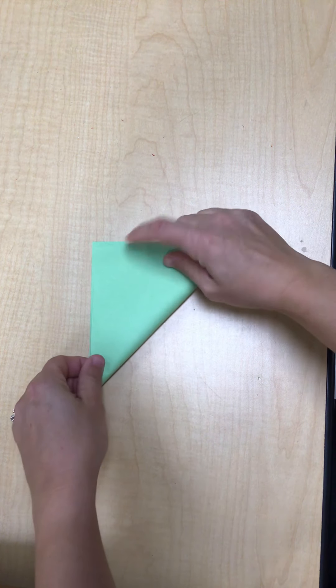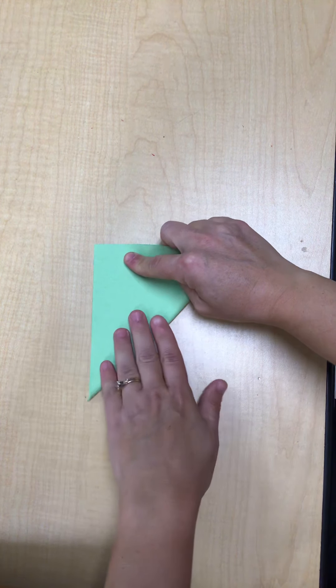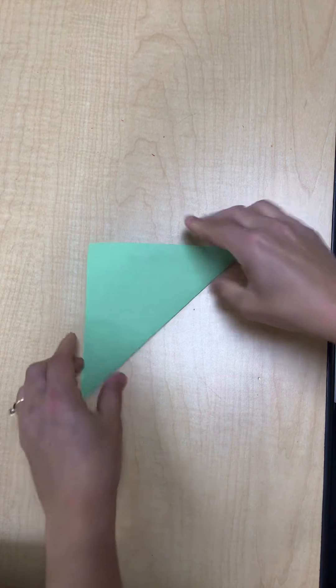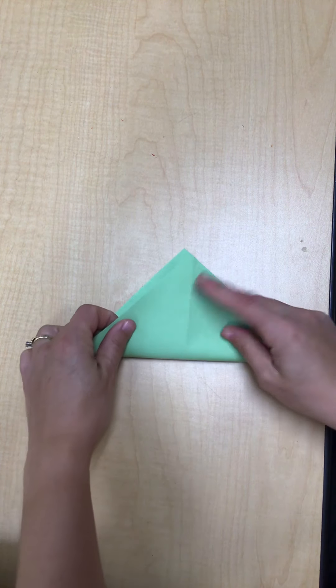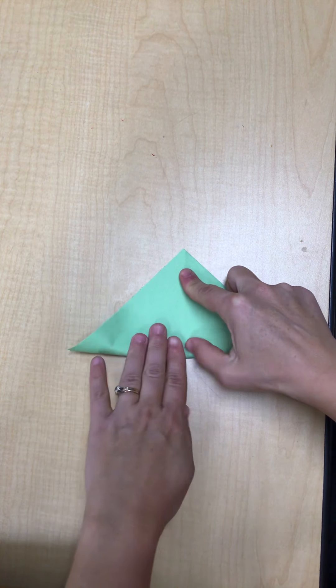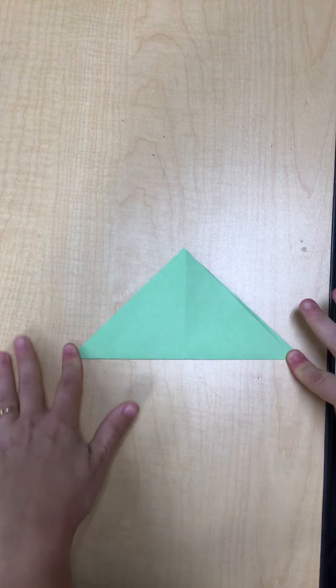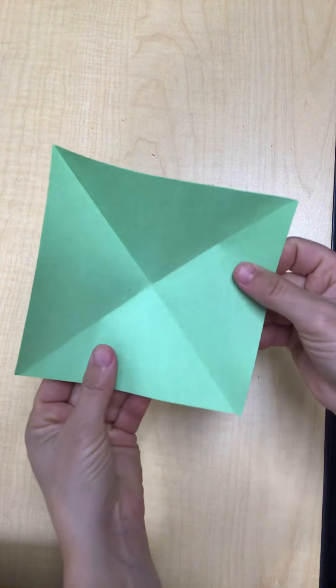You're going to fold diagonally this way. Okay. Open it up. Now fold diagonally the other way. Just like fold three, now you have that X.